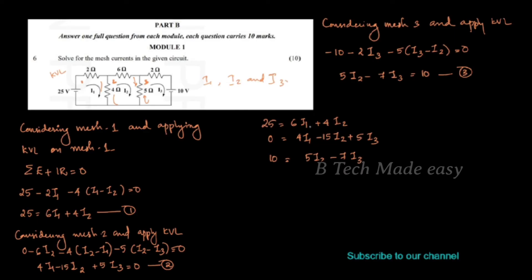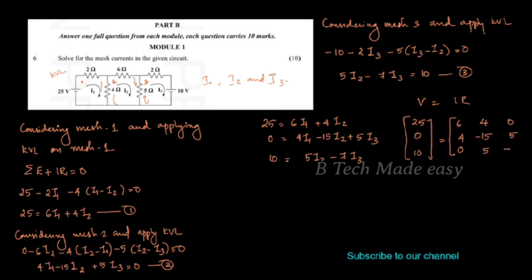We use Cramer's rule to solve the system. The matrix form is: [6, 4, 0; 4, minus15, 5; 0, 5, minus7] multiplied by [i1, i2, i3] equals [25, 0, 10].